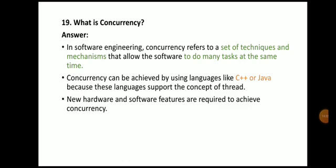In software engineering, concurrency refers to a set of techniques and mechanisms that allows the software to perform many tasks at the same time. Concurrency can be achieved using languages like C++ or Java because these languages support the concept of threads. New hardware and software features are required to achieve concurrency.